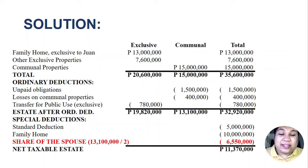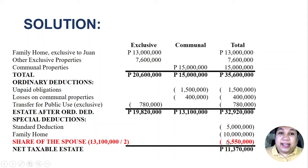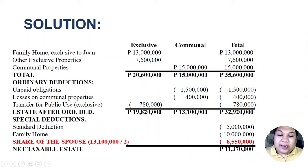This 11,370,000 is the amount that shall be subject to estate tax at 6%. That's how you compute the net taxable estate. Alternatively, you can solve this by taking 19,820,000, adding the decedent's share of 6,550,000 from the 13,100,000 communal estate, then deducting the 5,000,000 standard deduction and the 10,000,000 family home — you get the same amount. Always remember: the share of the surviving spouse is computed as the communal estate after deducting ordinary deductions, divided by 2.